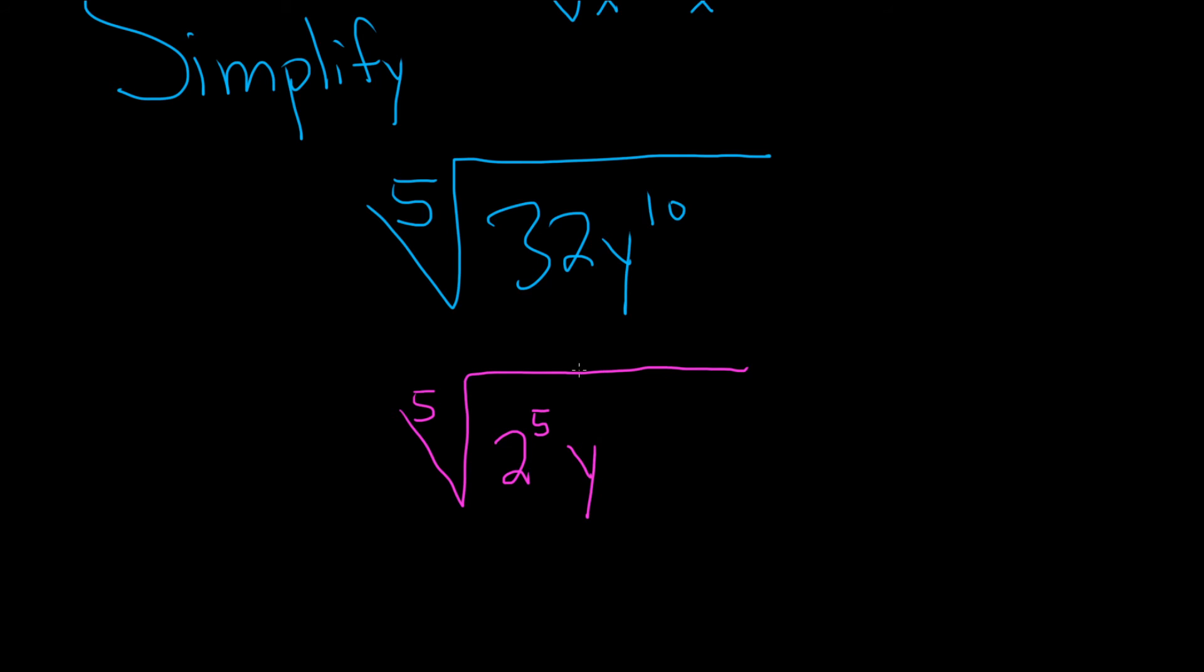Now, for the y piece, 2 times 5 is 10. So we can put the 2 here, and then we want to put the 5 out here because we want it to be the fifth power. And you can check, 5 times 2 is equal to 10, so all of this is okay.